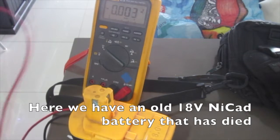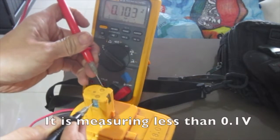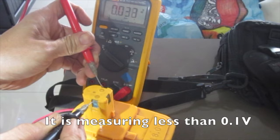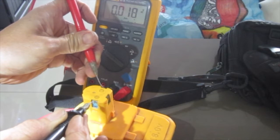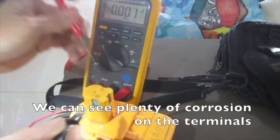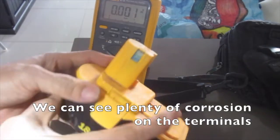Here we have an old 18 volt NICAD battery that has died. It is measuring less than 0.01 volts. We can see plenty of corrosion on the terminals.